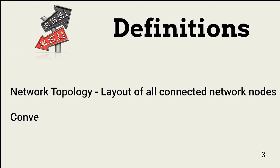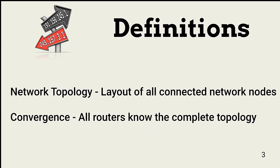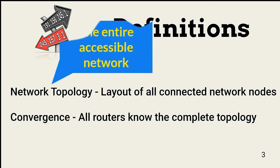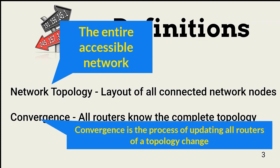Two concepts we need to understand when discussing routing are network topology and convergence. Network topology is the layout of the network — it includes all connected devices on all network segments. Complete convergence occurs when all routers know the network topology. This can take time after a change is made, and the convergence time is an important consideration for understanding how a change may affect network operation.